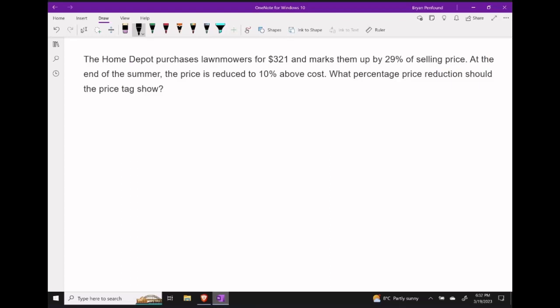Suppose that the Home Depot purchases lawnmowers for $321 each and then marks them up 29% of the selling price. At the end of the summer, let's suppose that the Home Depot is going to reduce this price to 10% above the cost price. What percentage price reduction should they show on their price tag?